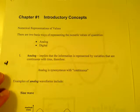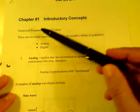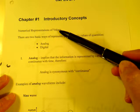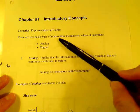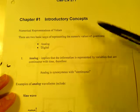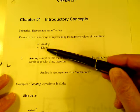If you take a look starting on page number 1, numerical representations of values. There are two basic ways of representing numerical values of quantities. One is analog and the second way is digital.